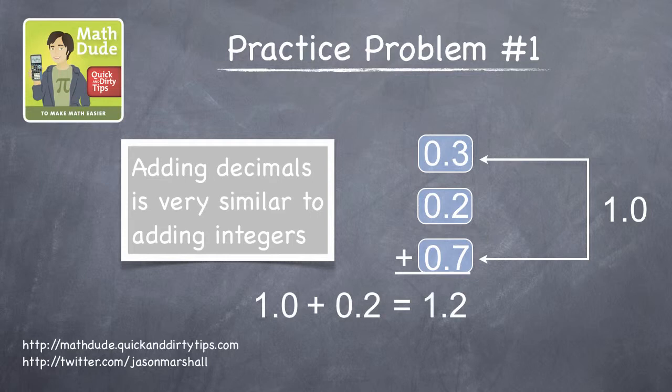Essentially it's the same problem as 3 plus 2 plus 7, except with a decimal point.